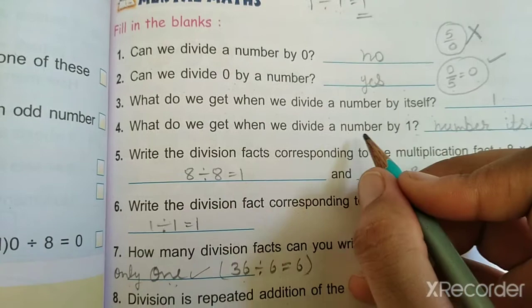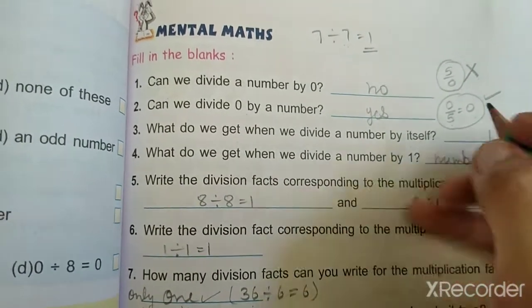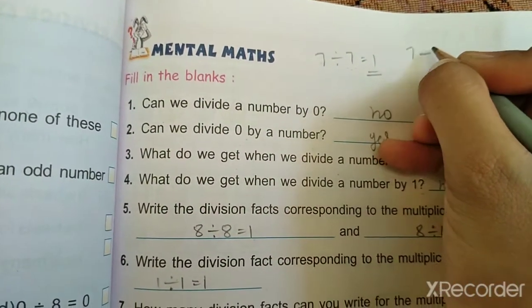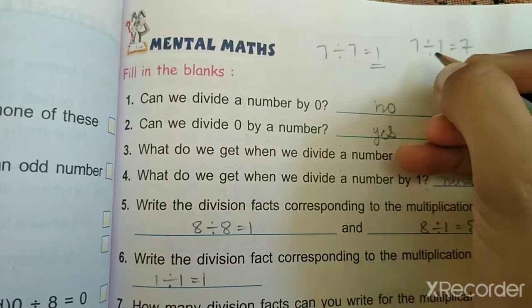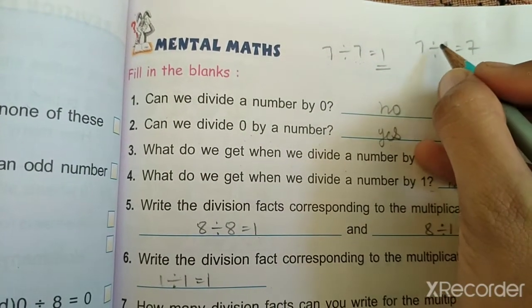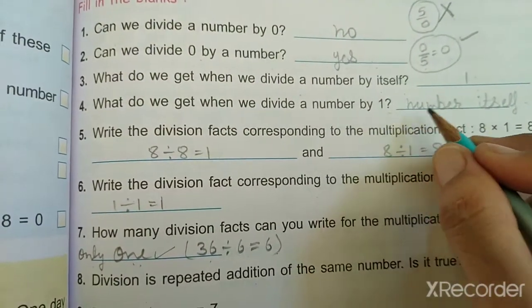What do we get when we divide a number by 1? The number itself. Similarly, for example, when we divide a number by 1, that number comes. So it means the number itself.